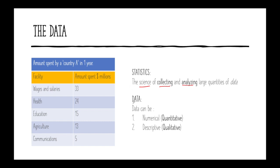Now data can be in two forms. We'll talk about two forms of data in this class. We'll talk about the numerical form, which is quantitative data. This has to do with numbers — like shoe size 8.5, or height 6 feet. All of these are numbers.